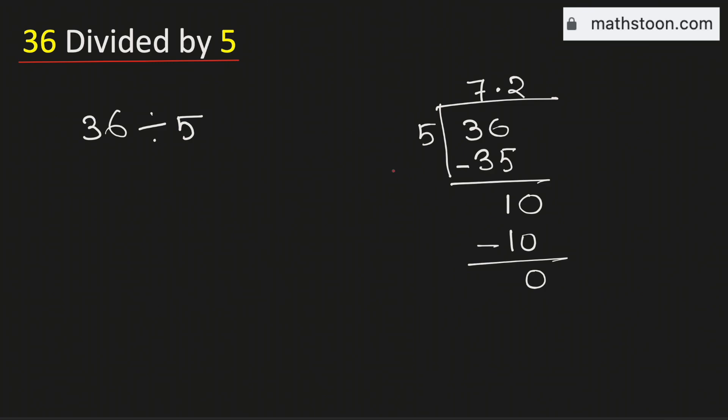Therefore, 36 divided by 5 is equal to 7.2, and this is our final answer.